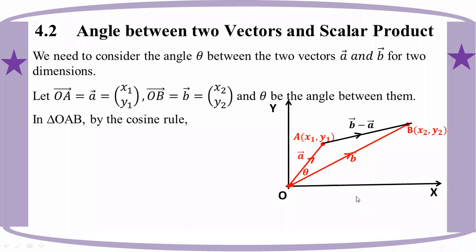The same thing is: b squared plus c squared minus 2bc cos alpha. So e squared is equal to b squared plus c squared minus 2bc cos alpha.